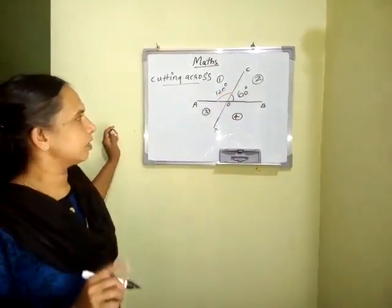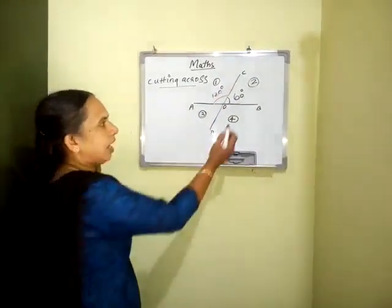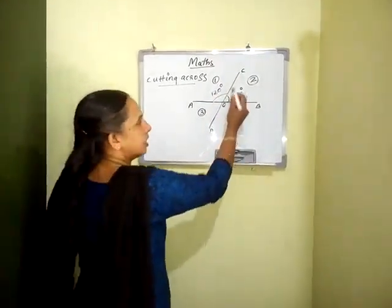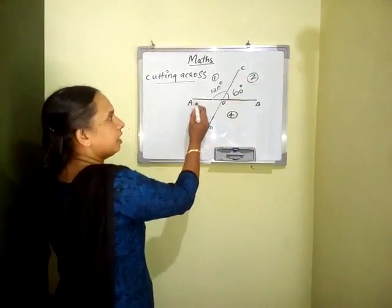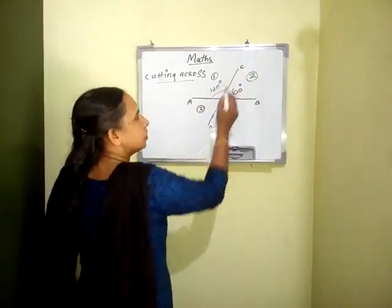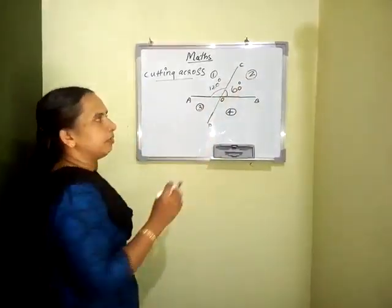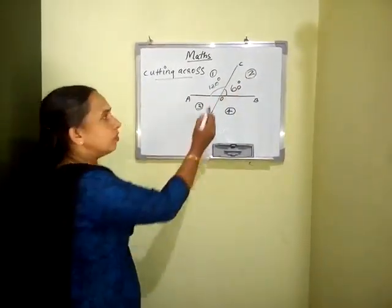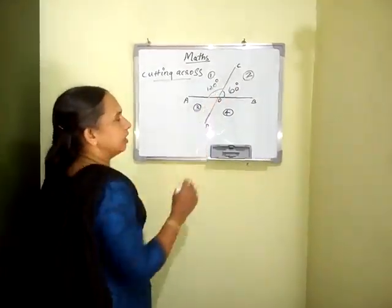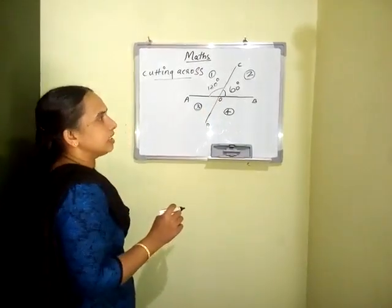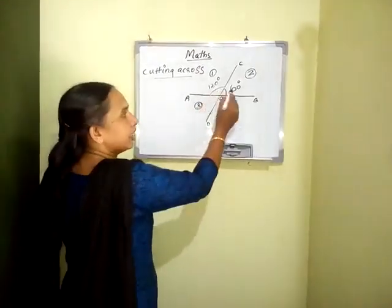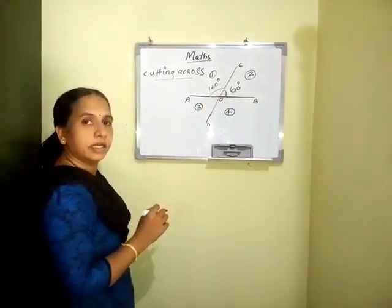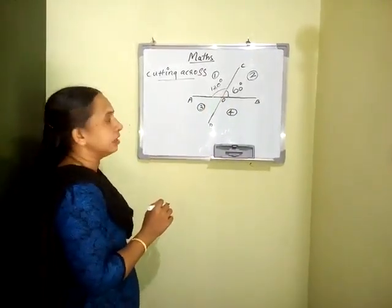Once more: angle BOC equals 60 degrees, and angle AOC equals 180 minus 60, that is 120 degrees. What is the reason? They make a linear pair.